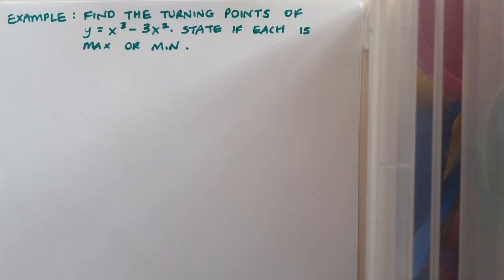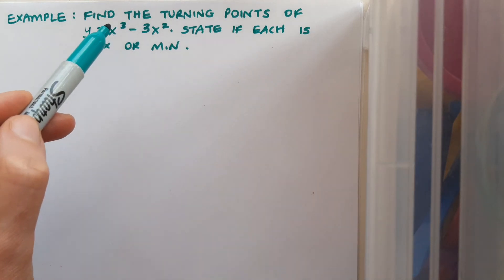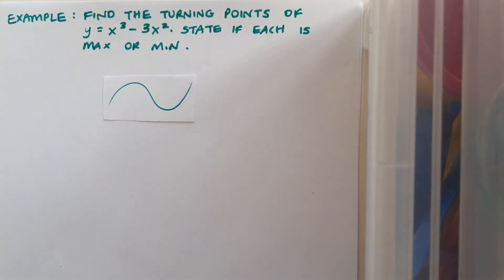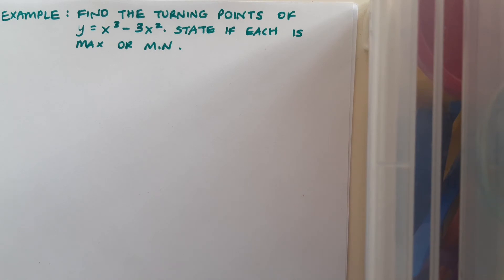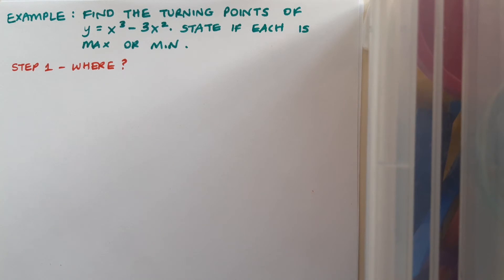So here's a second example. Find the turning points of y = x³ - 3x² and state if each is max or min. Now just before we begin, just notice this is x³ at the start, so it's letting me know that it's a cubic function, which would look something like this. And so I'm expecting that I'm going to get two answers, one max and one min. I'll follow the same steps as previously. Step 1, I'll find out where the points are. So to do that, I'll let dy/dx or f'(x) equal to 0. This time the function is called y, so I need to find dy/dx = 0.